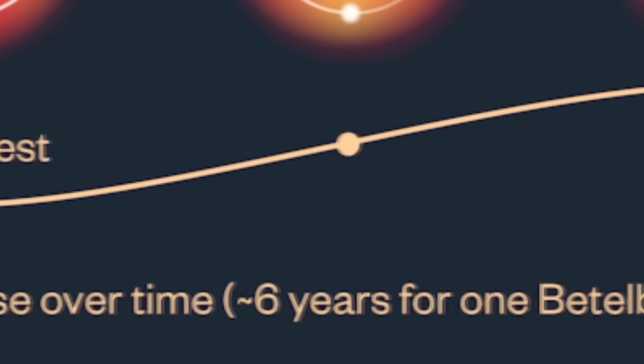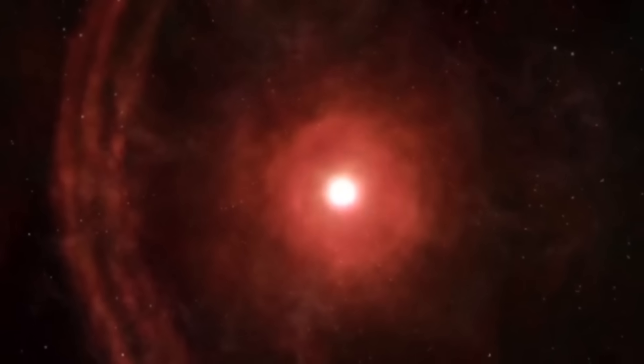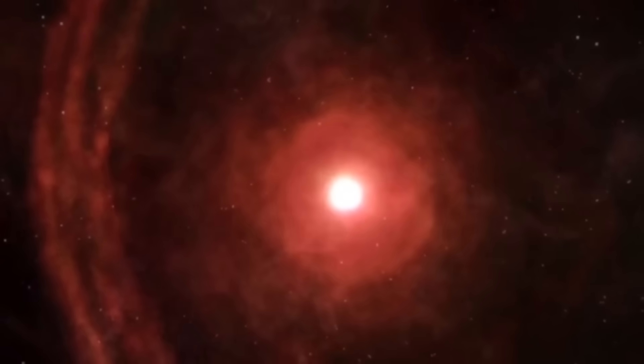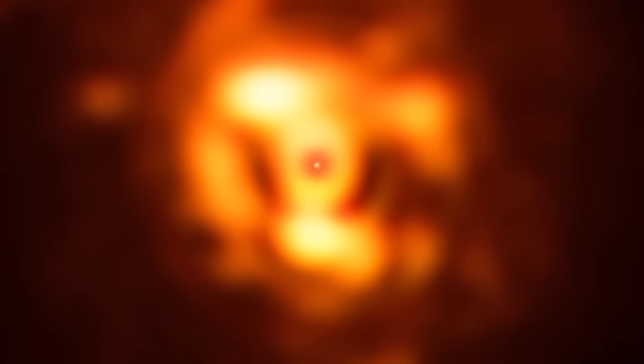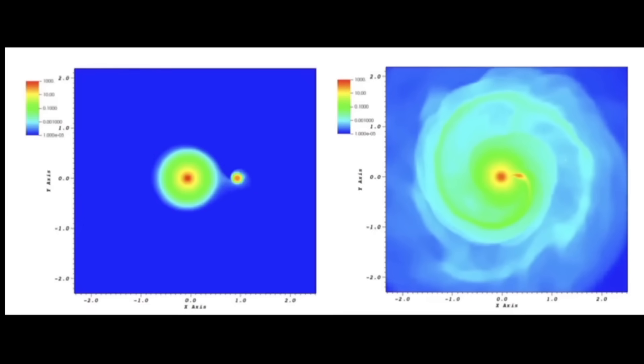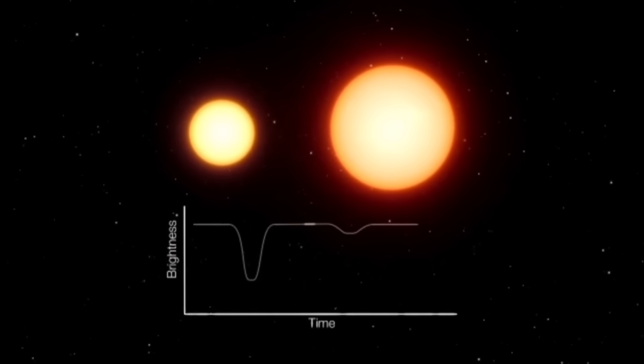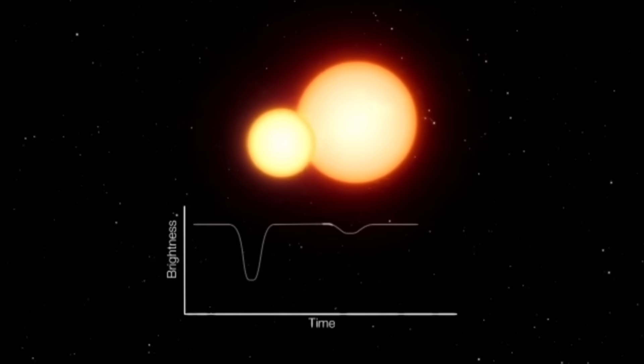It happens about once every six years, and no one could figure out why. Unlike the other dimmings, this pattern didn't match anything going on inside the star, like internal pulsations. It also didn't seem to be caused by dust clouds. For years, this six-year cycle of light fluctuations puzzled astronomers. Then, some researchers came up with an interesting idea. What if Betelgeuse isn't alone? What if there's a smaller companion star orbiting very close to it, and every few years, that star affects the light we see from Earth? They ran computer models and calculations and predicted that if such a companion exists, it might be one to two times the mass of our sun and orbit fairly close to Betelgeuse.